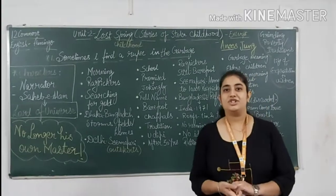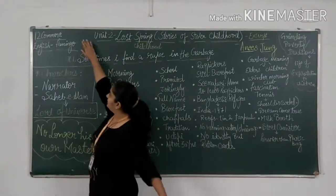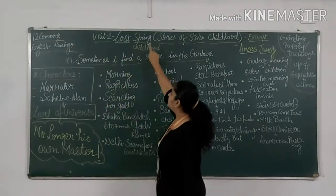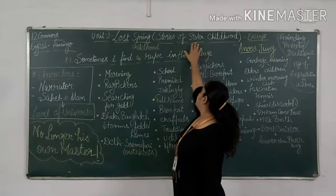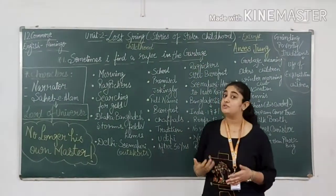Hello friends, this is Roshni Manglani and today we are looking into 12th Congress English Flamingo. Unit 2 is Lost Spring, Stories of Stolen Childhood. So this is the chapter's name: Lost Spring, Stories of Stolen Childhood.